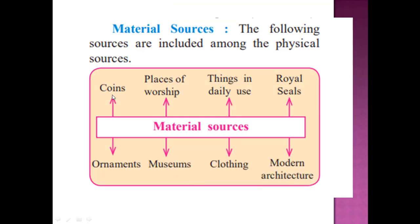Under material sources, you can see coins, museums, items like clothes, royal seals, and modern architecture. These physical or material sources help us understand the post-independence era through tangible objects and structures that have survived from that period.